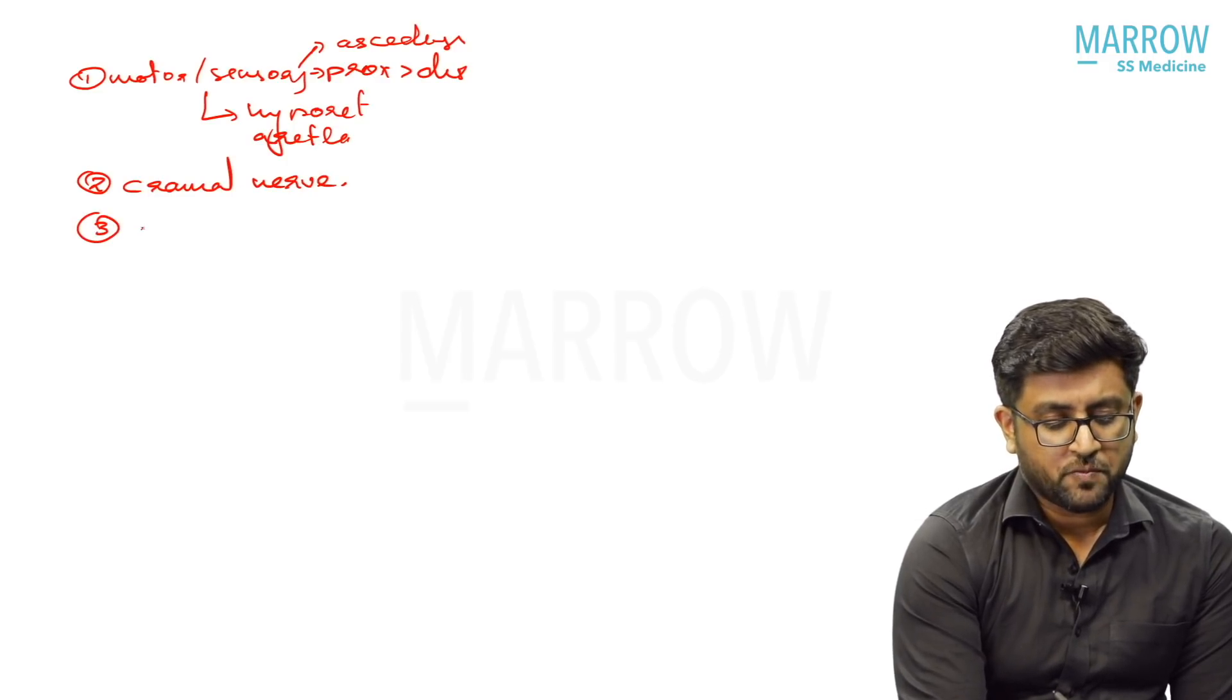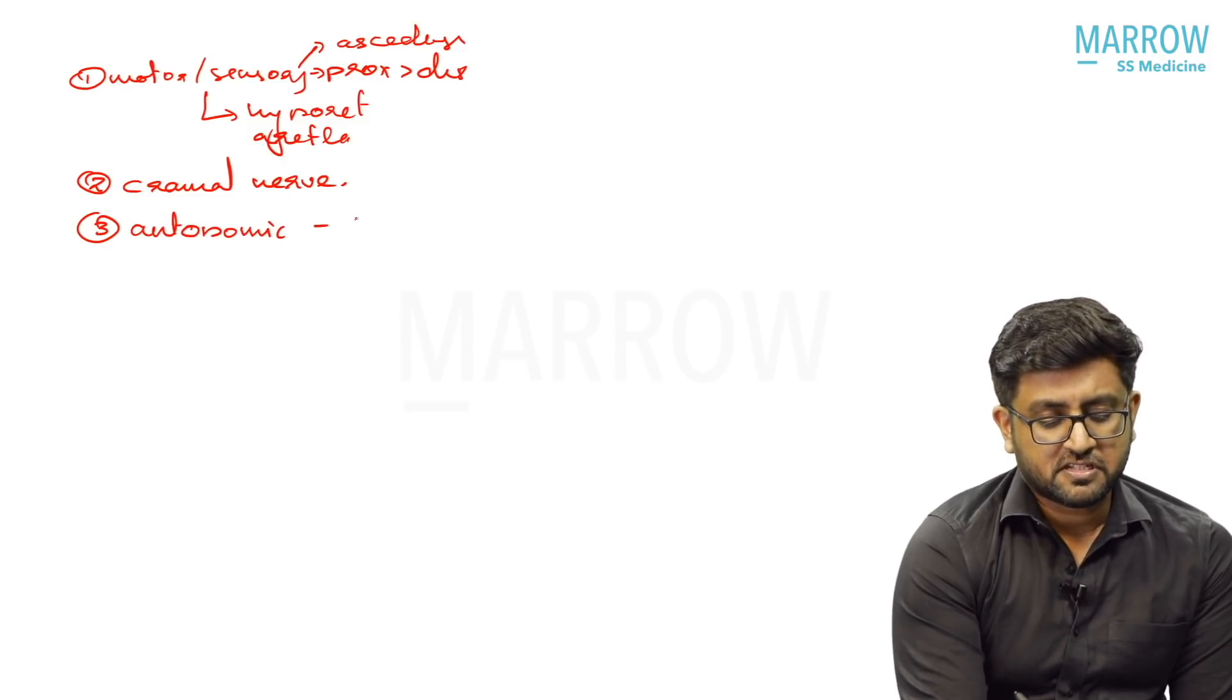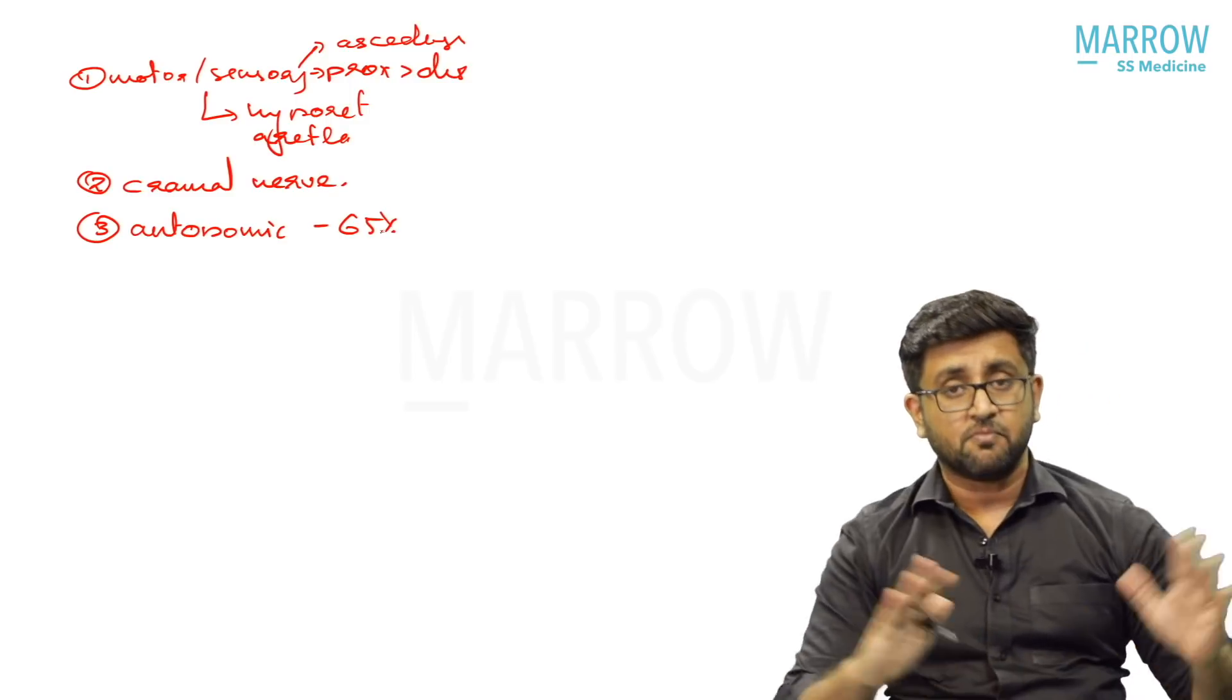Autonomic system involvement is classical for GBS. Around 65% of patients will get some autonomic involvement during the course of GBS. GBS itself has some variant which presents with only dysautonomia - that is pan-dysautonomic variant of GBS. That is a rare variant. They can present only with dysautonomia or predominant dysautonomia, less weakness. Autonomic symptoms are dreadful because they can cause death, as many times GBS patients arrest because of cardiorespiratory failure or secondary because of autonomic failure.